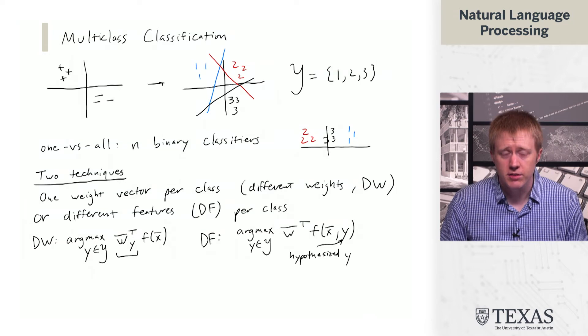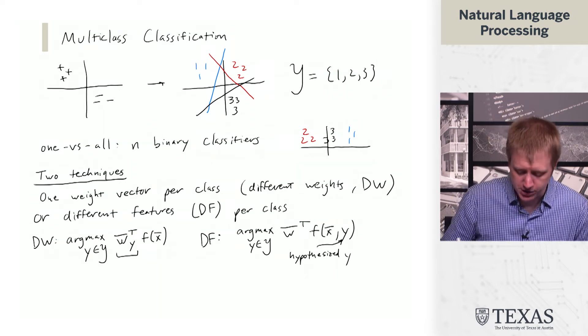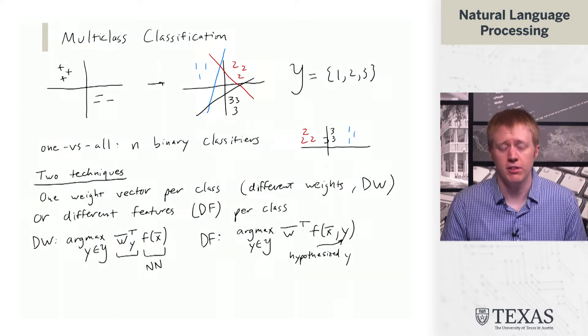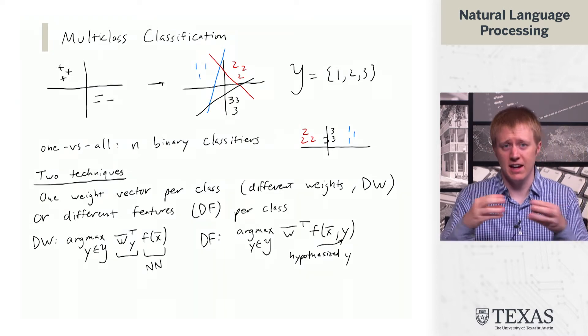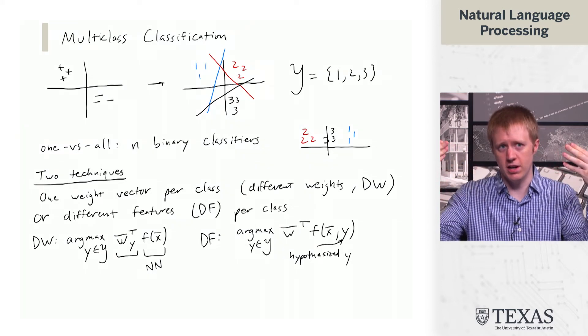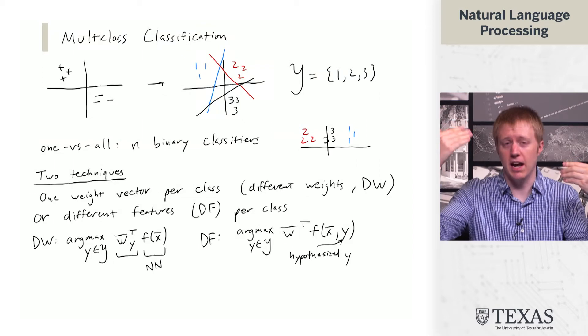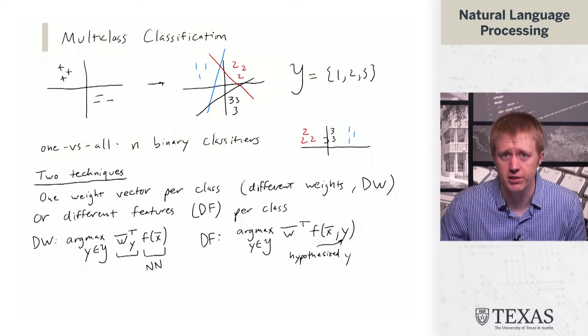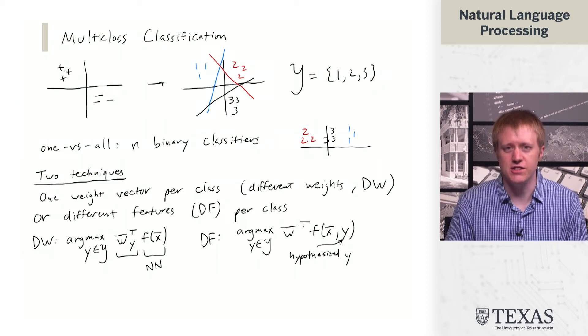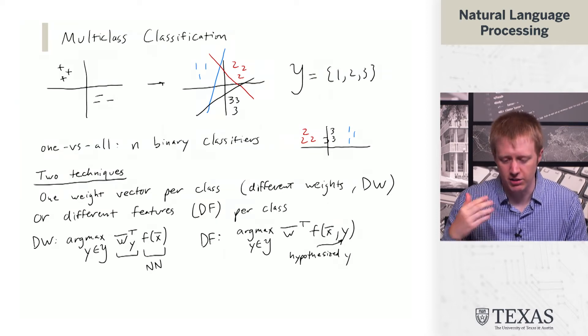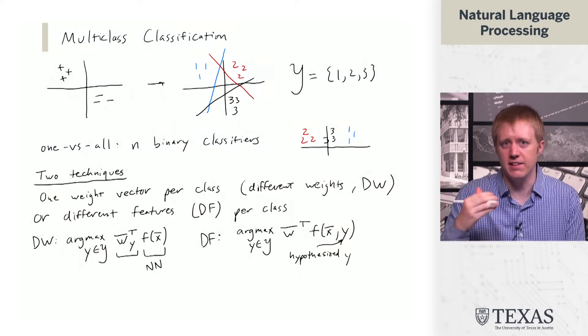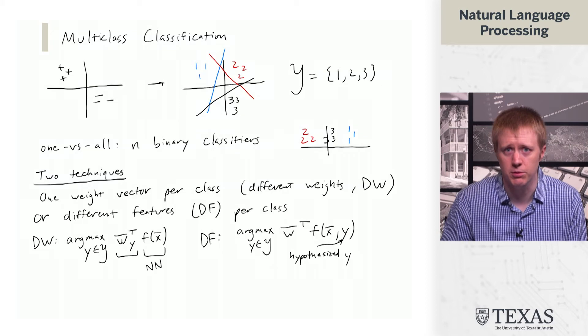The reason we're not going to use this as much in neural nets is that we're going to think about neural networks as taking the input x and doing a whole bunch of computation on it, and then at an output layer we determine what class something falls into. The different features technique is not so good for that because by injecting the y early into the process you would end up having to rerun your neural net N times for doing N-way classification, which is not something you want to do.